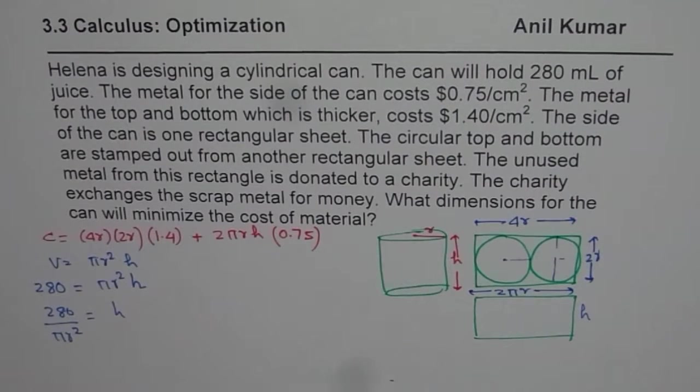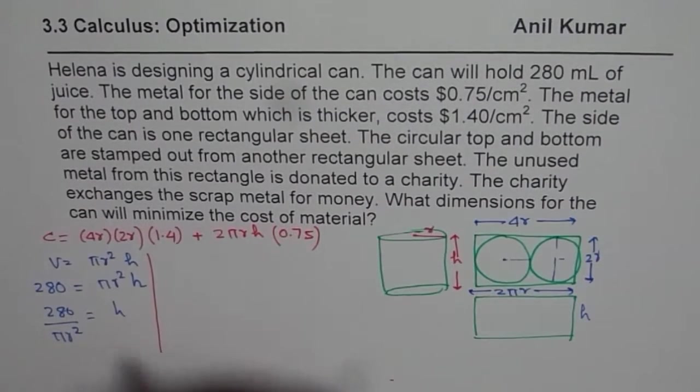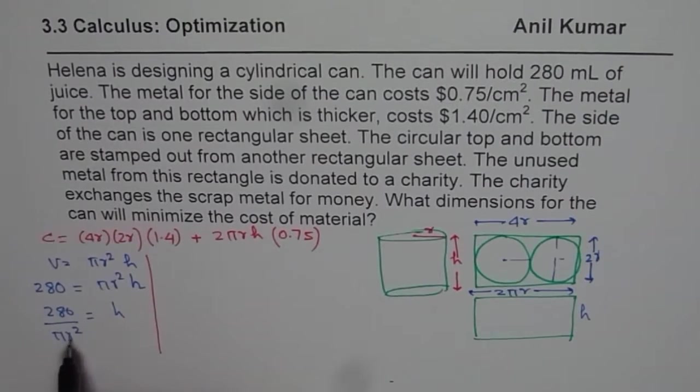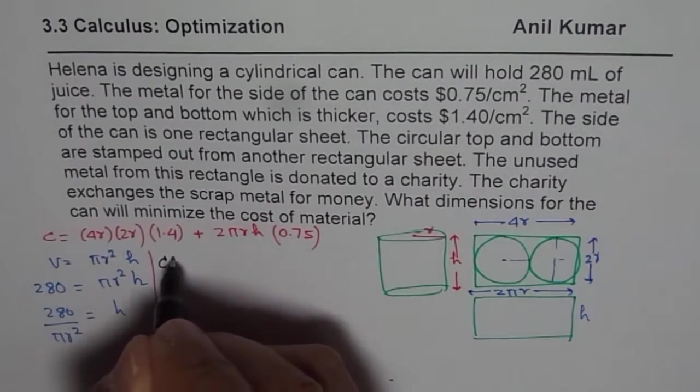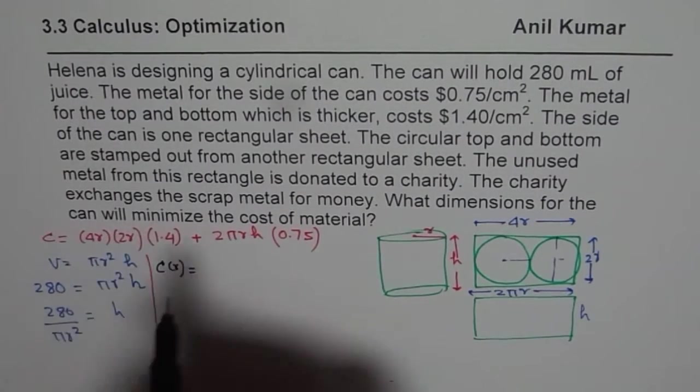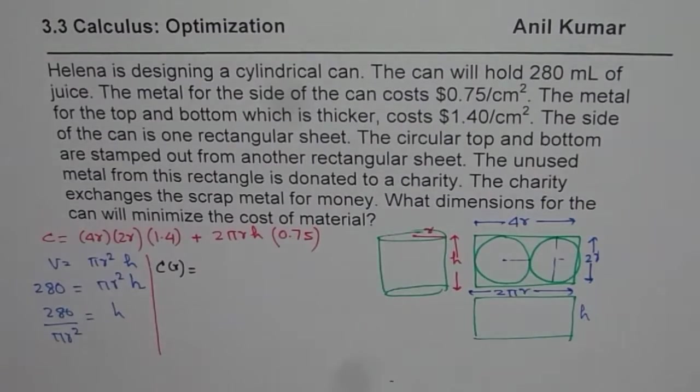So once you use this relation, you can write your equation in one variable. So your variable now will be R. So I can write the cost with R will be equals to these terms you can multiply. 4 times 2 is 8 and then 1.4 also. So we will do 8 times 1.4 which is equals to 11.2. So I am just writing 11.2 R square